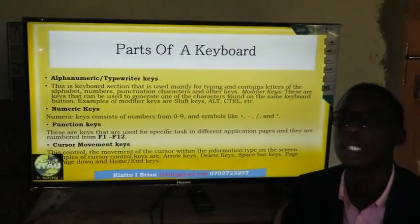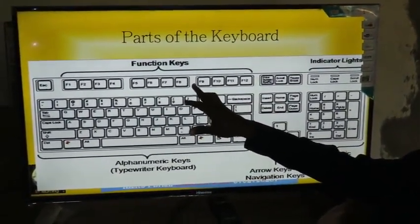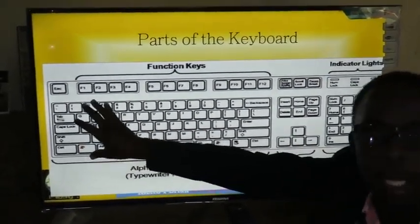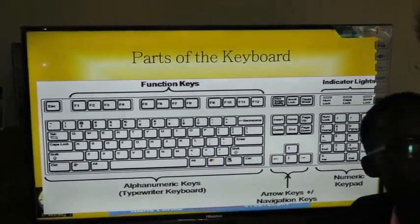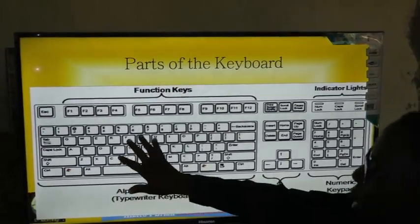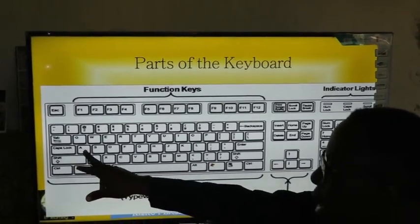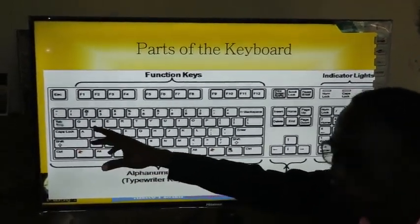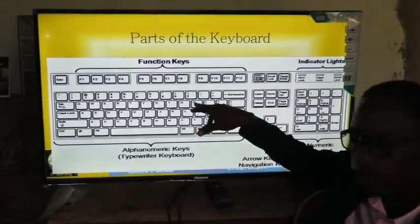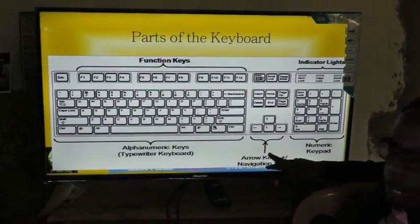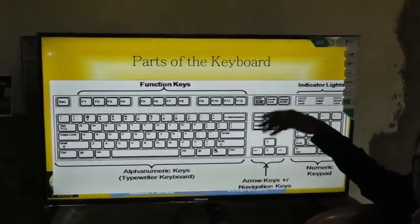The keyboard has a number of parts. Functional keys from F1 to F12. The largest part of the keyboard is called the QWERTY part, or alphanumerical keys, or typewriter keys — used for entering data when typing. They are called alphanumerical because they have alphabetical letters from A to Z, though not in alphabetical order, and numerical digits 1 through 0. There are also arrow keys or direction/navigation keys used to move up, down, and sideways to navigate through the page, and a numerical keypad.